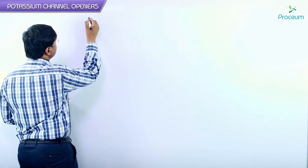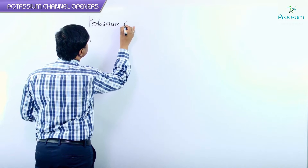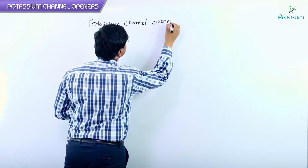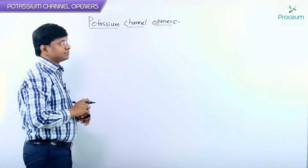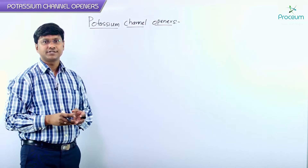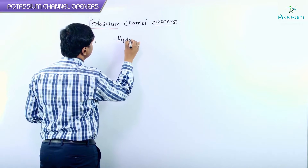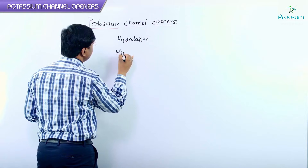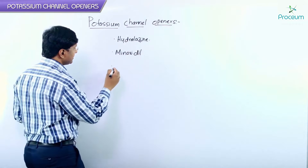Among the vasodilators, let me discuss the first one — the potassium channel openers. The drugs included in this group are: number one, hydralazine; the other drugs are minoxidil; and the other drug is diazoxide.